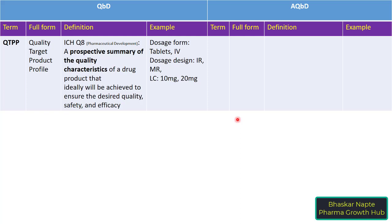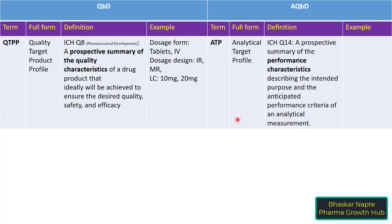The similar term in the AQBD approach is called ATP, or Analytical Target Profile. The definition of ATP is a prospective summary of the performance characteristics describing the intended purpose and anticipated performance criteria of analytical measurement. The performance characteristic is the key concept in the AQBD part.